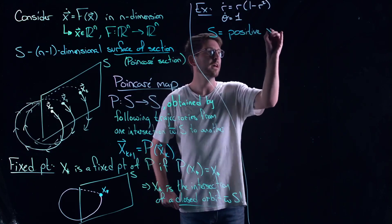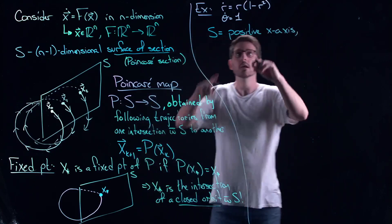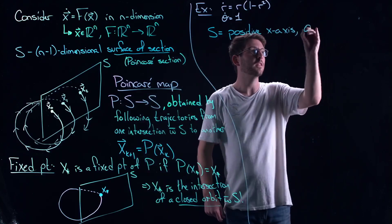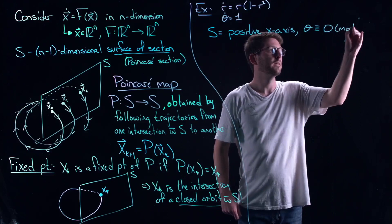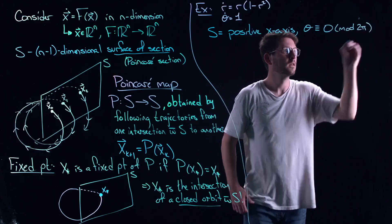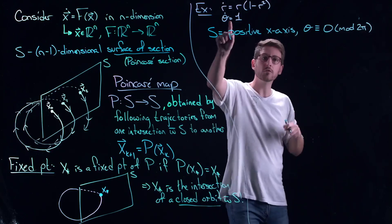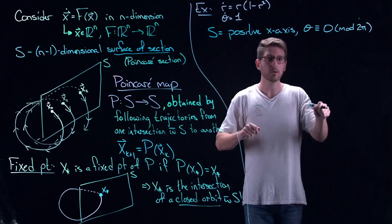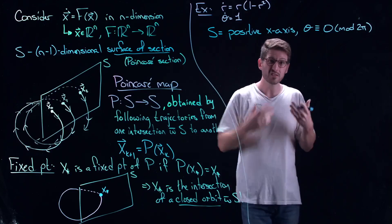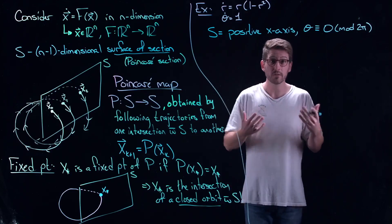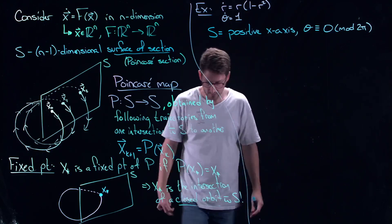We've already seen before that this system has a closed orbit given by the unit circle in the plane, and we've also seen that it's attracting. Let's set the surface of section to be the positive x-axis, which in polar coordinates is when theta = 0 mod 2π. We're swirling in the vector field, so every time we go through 0 that's when we track our intersection — similar to fireflies lighting up every time you go through 0.